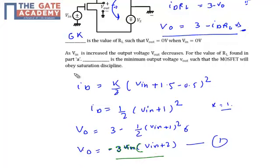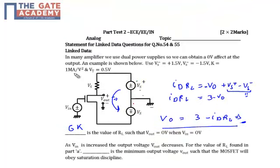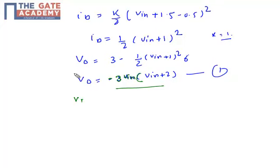We know that for a transistor to work in the saturation region, it must always satisfy the property that VDS ≥ VGS - VT. For the minimum condition under which the transistor works in saturation, VDS must be at least equal to VGS - VT. So I will find the minimum VDS, which equals VGS - VT, which is VIN + 1.5 minus 0.5.